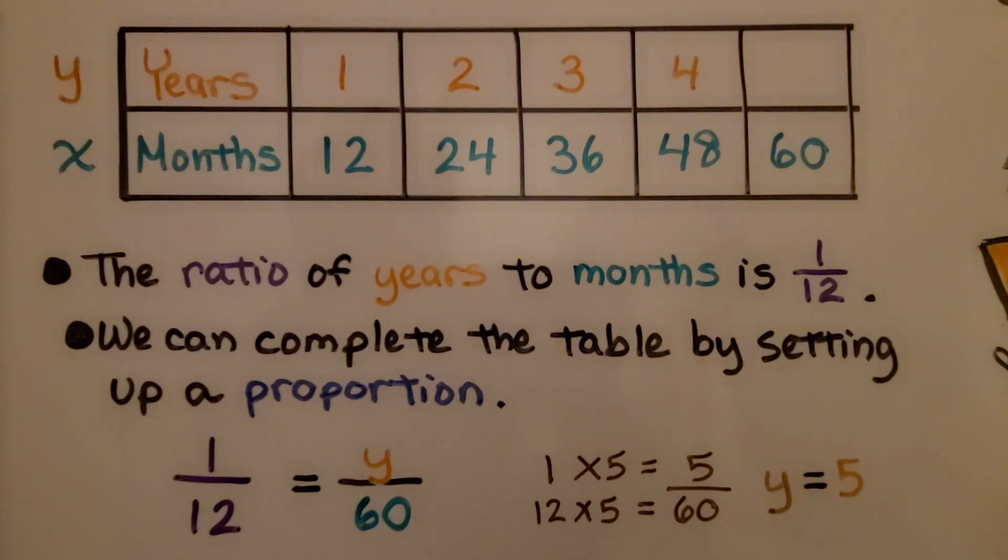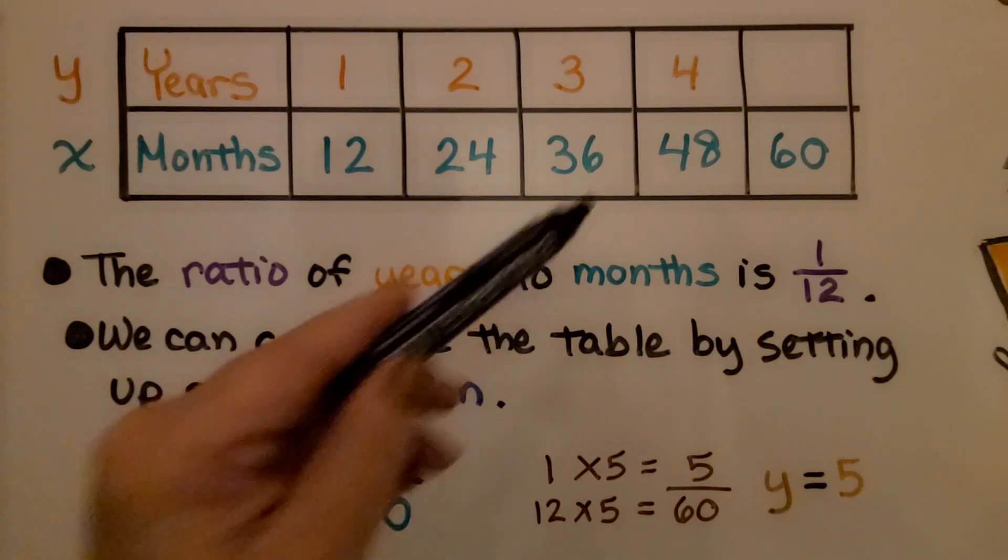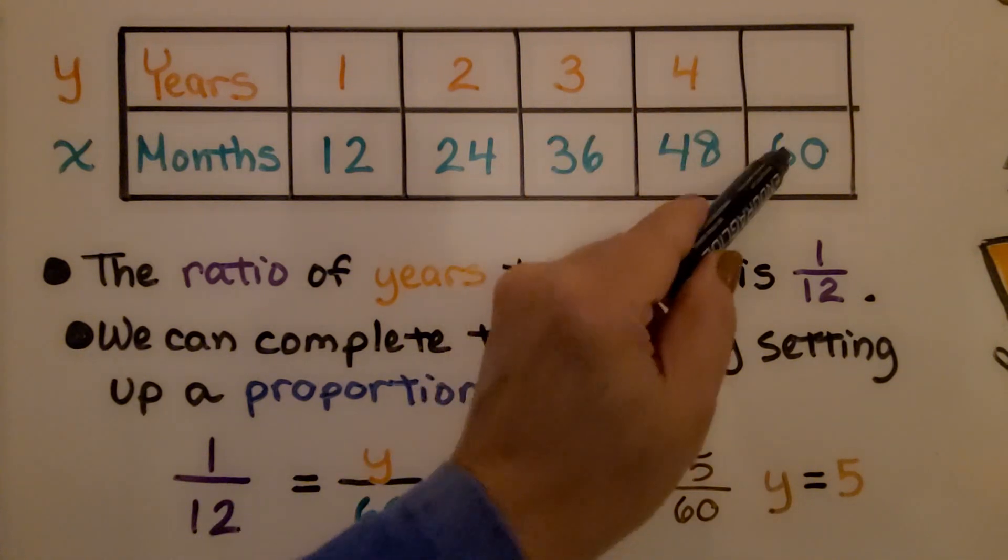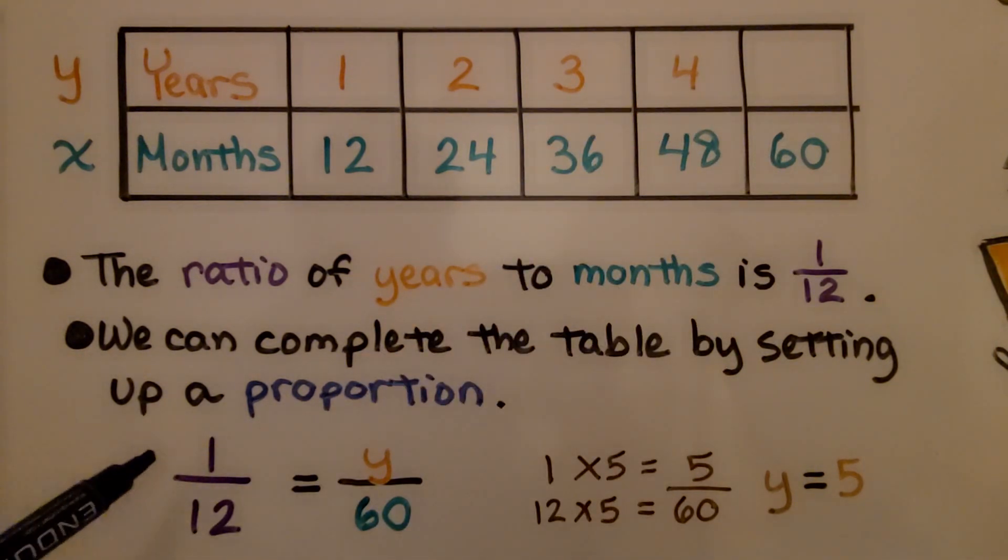The ratio of years to months is 1 to 12, and we can complete the table by setting up a proportion. We have a ratio of 1 to 12, and we have some number y to 60. We think, well, 12 times 5 is 60.